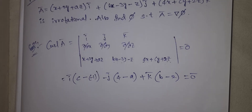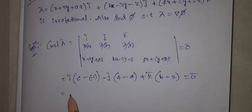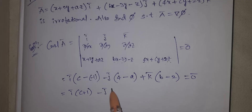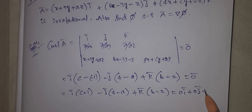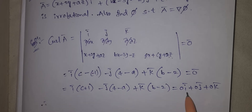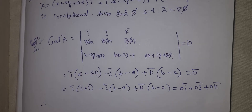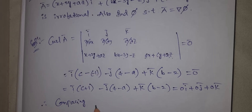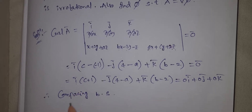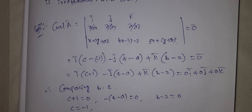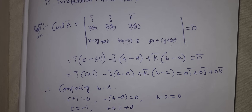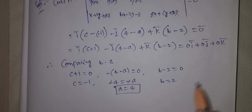So: I bar component: c plus 1 minus J bar component: 4 minus a, plus K bar component: b minus 2, equal to 0 I bar plus 0 J bar plus 0 K bar. Comparing both sides — I bar: c plus 1 = 0, so c = minus 1. J bar: minus(4 minus a) = 0, so a = 4. K bar: b minus 2 = 0, so b = 2.